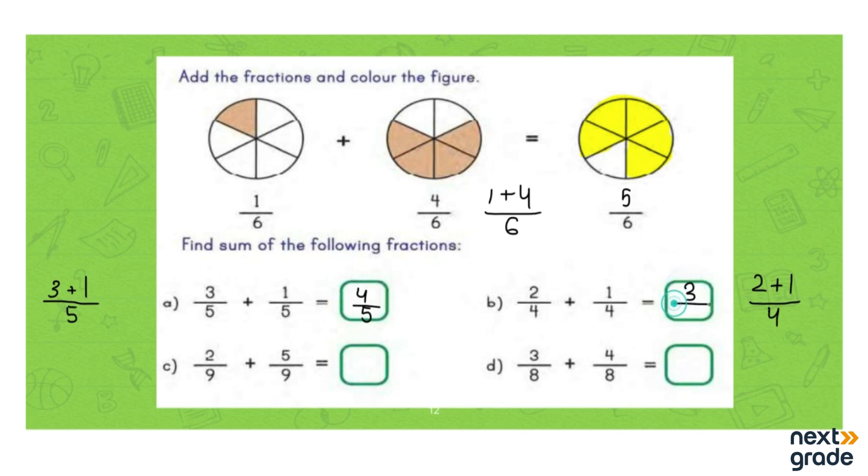Now let's look at part c, and that is 2/9 + 5/9. So we'll write 2 + 5 with the same denominator 9. What is 5 + 2? Five plus two is seven, that means 7/9. Let's look at another example - that is 3/8 + 4/8.